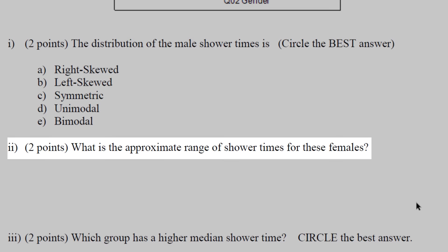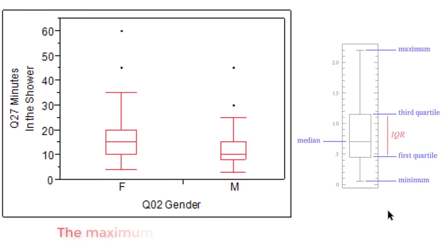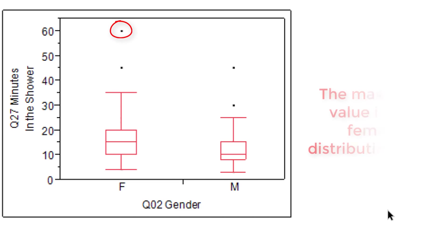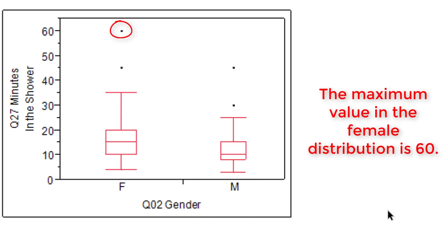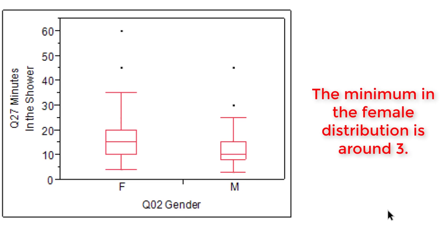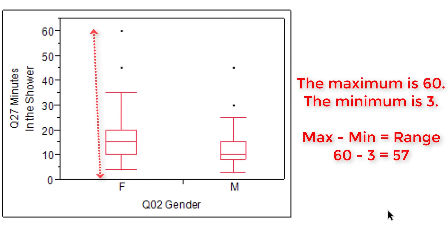The next question asks us to approximate the range for female shower times. A lot of people make a mistake here — they forget to include the outliers. The highest shower time is 60 minutes, which is definitely an outlier. The lowest point is hard to tell exactly, but it's probably around three — below five for females and above zero. So the minimum is three and the maximum is 60. The formula for the range is max minus min, so 60 minus 3 is 57 minutes.